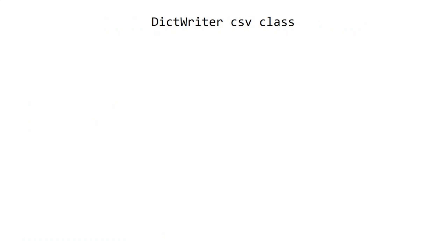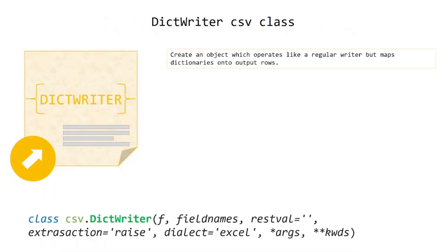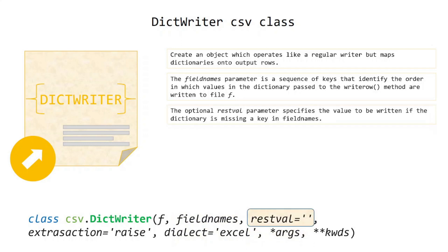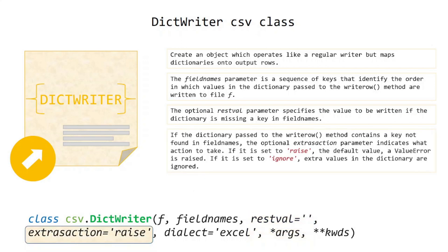DictWriter CSV class creates an object which operates like a regular writer but maps dictionaries onto output rows. The fieldnames parameter is a sequence of keys that identify the order in which values in the dictionary passed to the writerow() method are written to the file. The optional restval parameter specifies the value to be written if the dictionary is missing a key in fieldnames. If the dictionary passed to writerow() contains a key not found in fieldnames, the optional extrasaction parameter indicates what action to take. If it is set to 'raise' (the default), a ValueError is raised. If it is set to 'ignore', extra values in the dictionary are ignored.